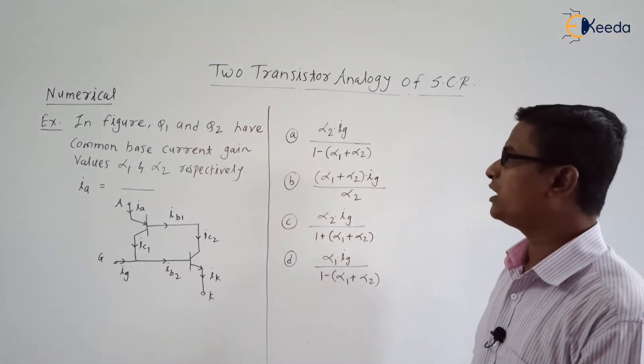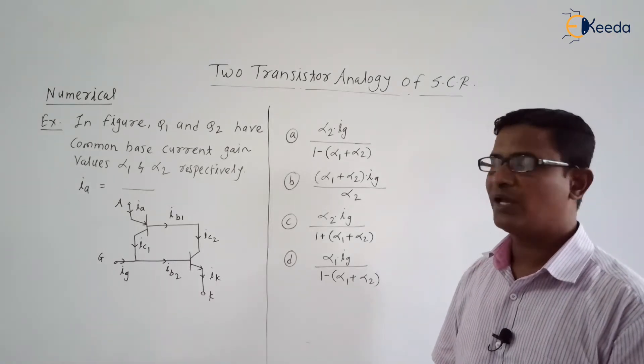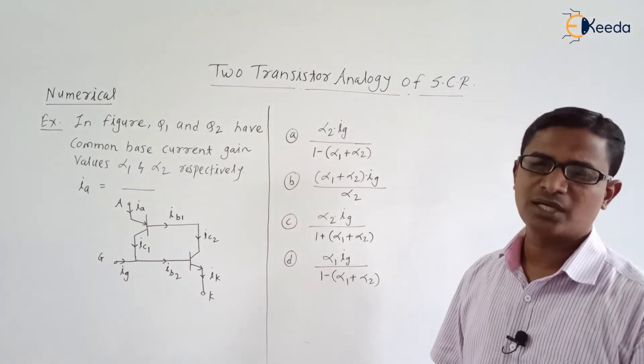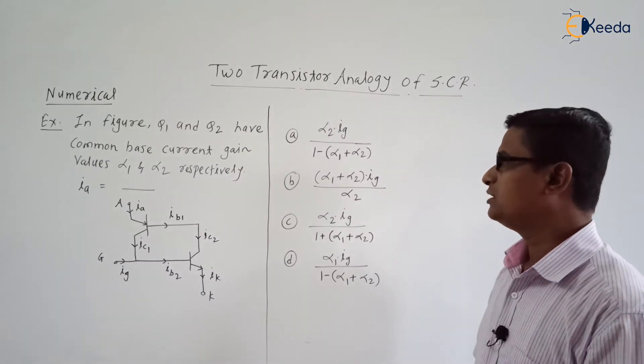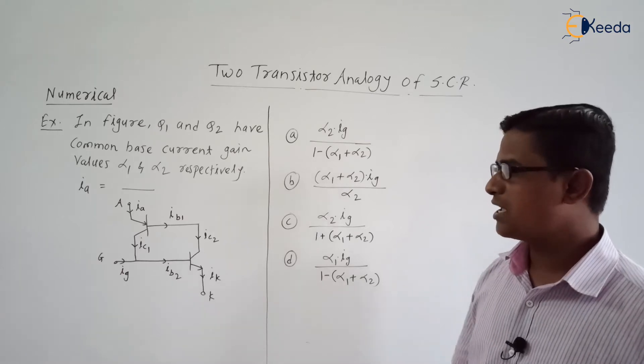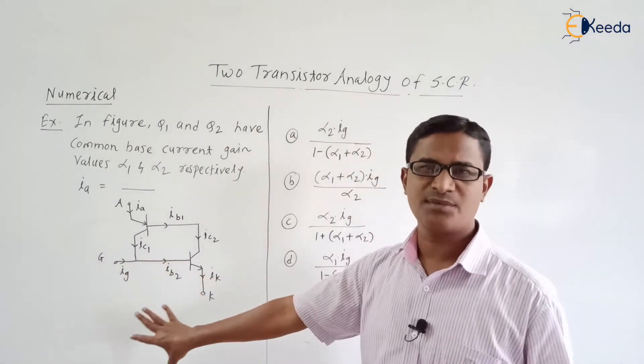In figure Q1 and Q2 have common base current gain values alpha 1 and alpha 2. They have given common base current gain alpha 1 and alpha 2 and our task is to find the Ia. They have given this circuitry. It is like a two transistor analogy of the SCR, same circuitry.